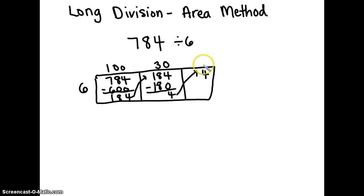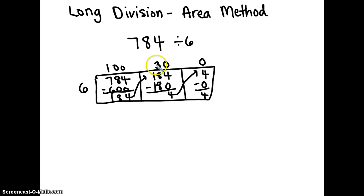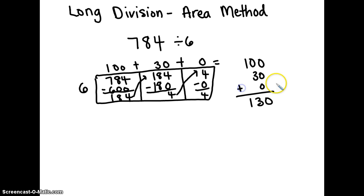Put the four in the ones place. Six cannot go into four, so you put a zero on top of the four. Subtract four minus zero, which equals four. Then add one hundred plus thirty plus zero, which equals one hundred thirty. Now add the remainder: four.